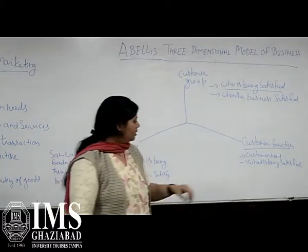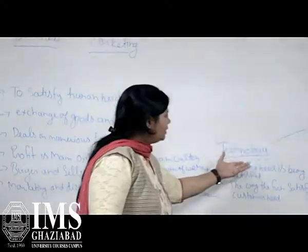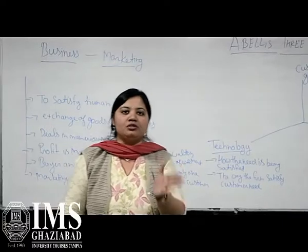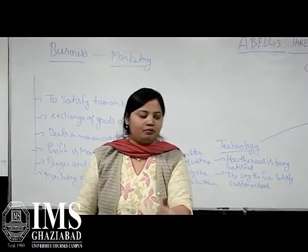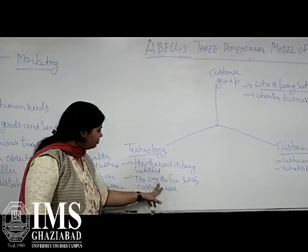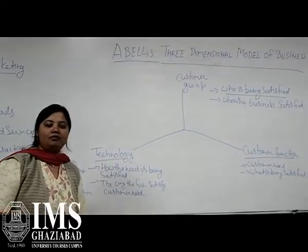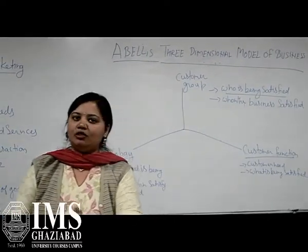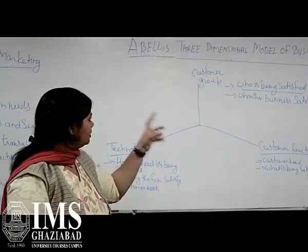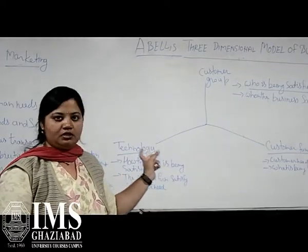The second dimension is customer functions, which is related to customer needs and requirements. The third dimension is technology, which is the form of providing solutions to problems — how the need is being satisfied. With the help of technology we can satisfy the need of the customer. So according to Abell, there are three dimensions: customer group, customer functions, and technology.